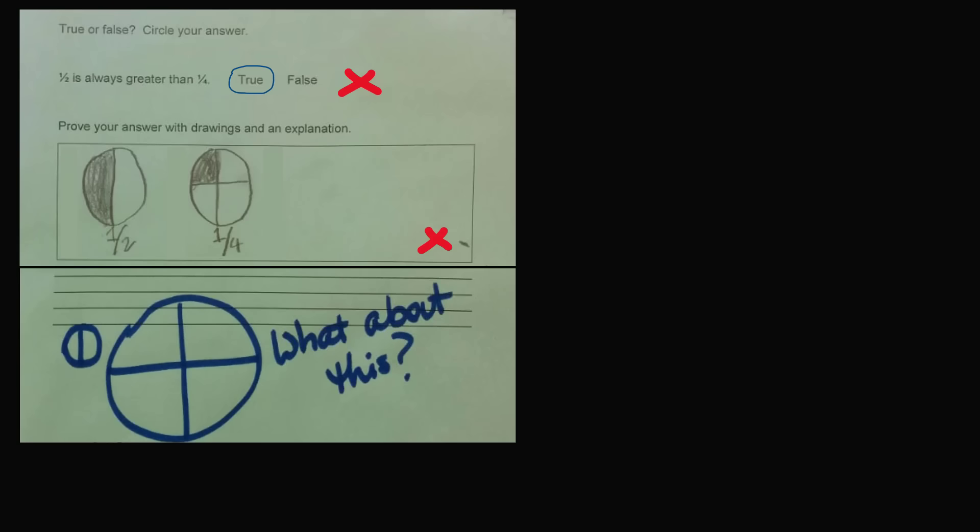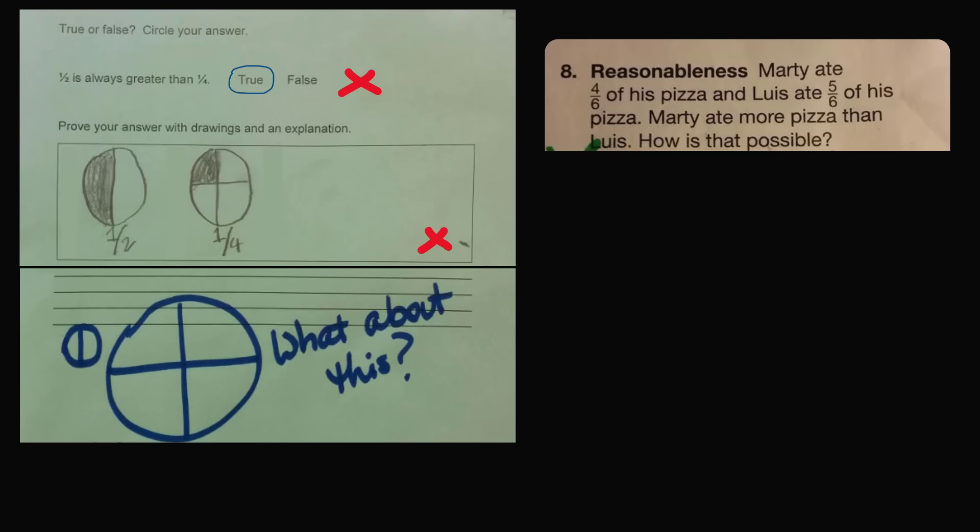Sometimes it can feel like the teacher is just out to get you. This problem reminded me of another problem that went viral. Here's another question. Marty ate four-sixths of his pizza, and Lewis ate five-sixths of his pizza. Marty ate more pizza than Lewis. How is that possible?